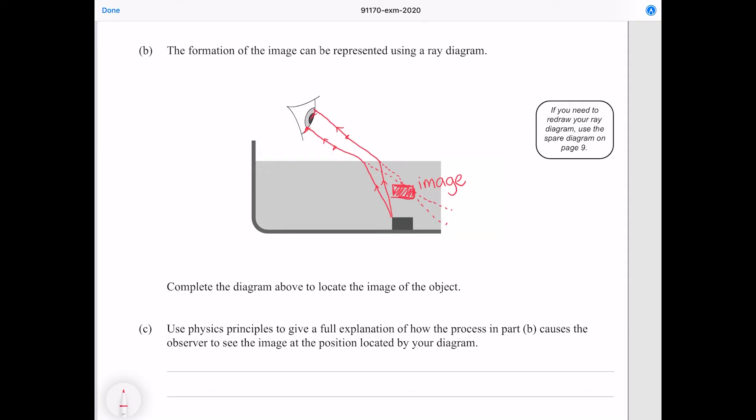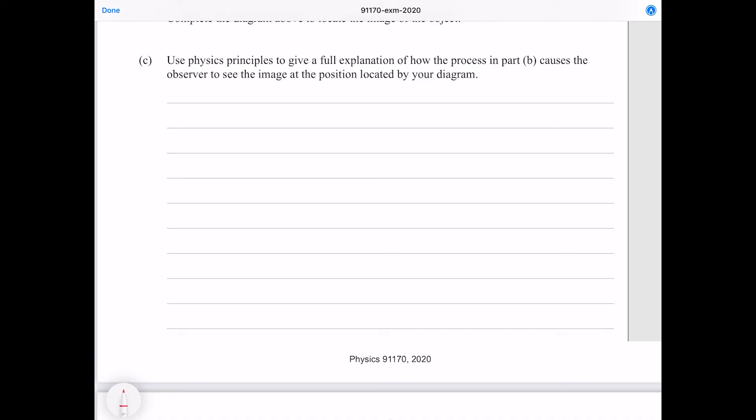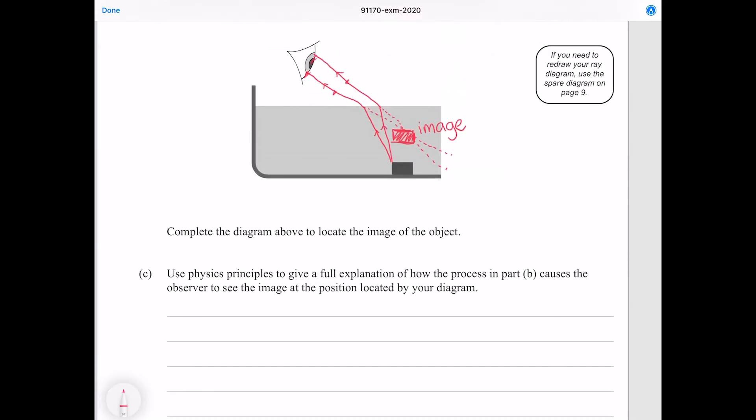The diagram does a terrible job of representing this. In fact I'd go as far to say that it's destructively misleading. Moving on: Use physics principles to give a full explanation of how the process in part B causes the observer to see the image at the position located by your diagram. So there are a couple of key ideas here. The first is that we have refraction, that we have the rays bending away from the normal as they go from the water to the air.